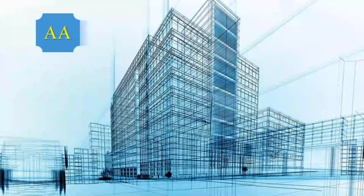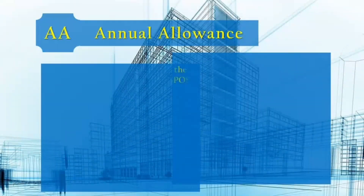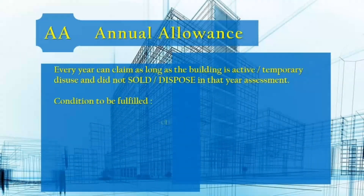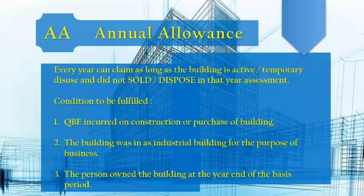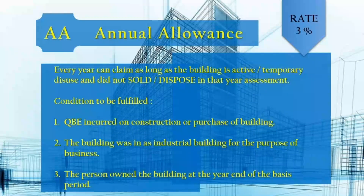Annual Allowance can be claimed every year as long as the building is active or in temporary disuse and was not sold or disposed of in that year of assessment. Conditions to be fulfilled: QBE incurred on construction or purchase of building; the building was in use as an industrial building for the purpose of business; and the person owned the building at the year end of the basis period.